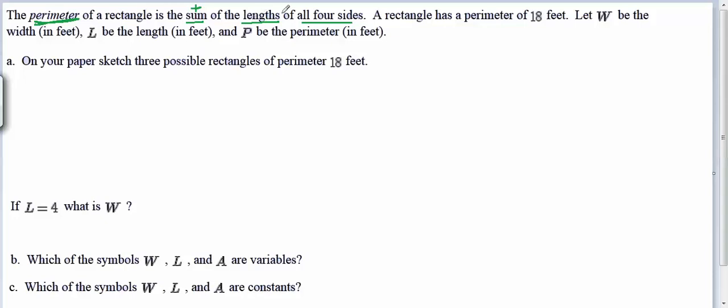And they've also defined some symbols for us. They tell us the symbol W will represent the width of the rectangle, L will be the length, and P will be the perimeter. So we could write the formula for perimeter in words by saying perimeter equals length plus length plus width plus width.